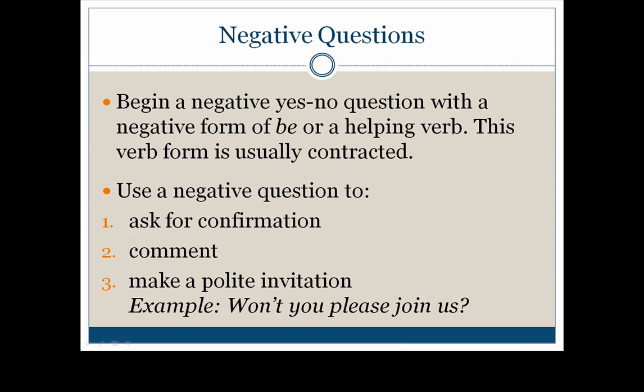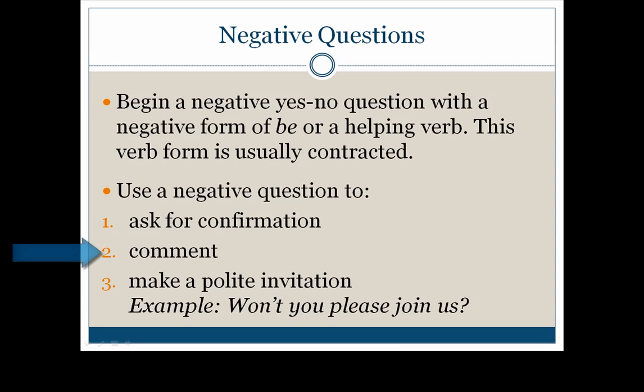Let's review what we've learned. We begin a negative yes-no question with a negative form of be or a negative form of a helping verb. This verb form is usually contracted. We use a negative question to ask for confirmation or comment. Or we can also use a negative question to make a polite invitation — for example, 'Won't you please join us?'